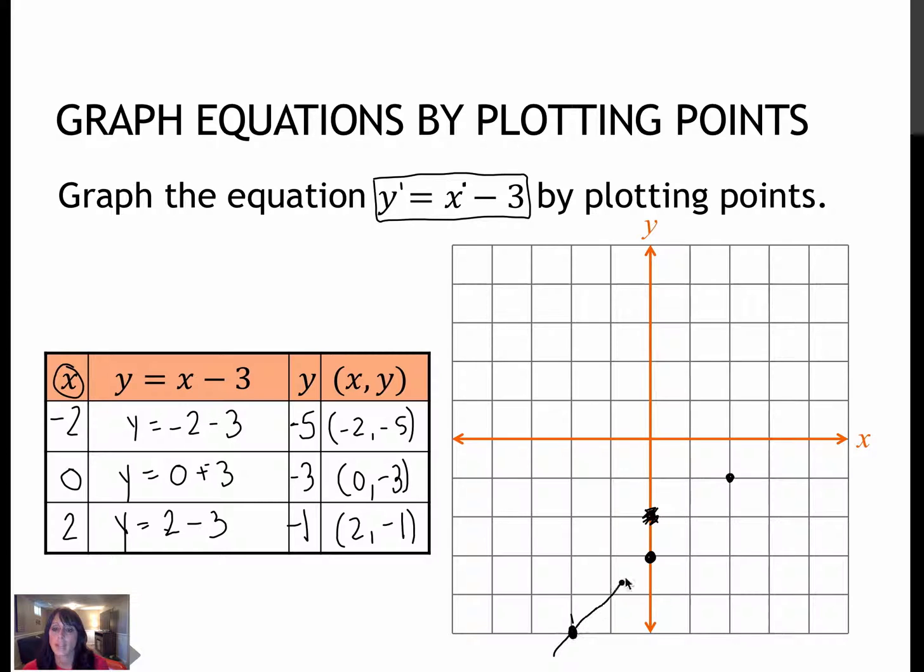So I'm going to connect the dots. And that's my line. So notice at the end of each line, I'm putting an arrow because I've only found 3 of an infinite number of points that goes on forever to the right and goes on forever to the left, pointing down.